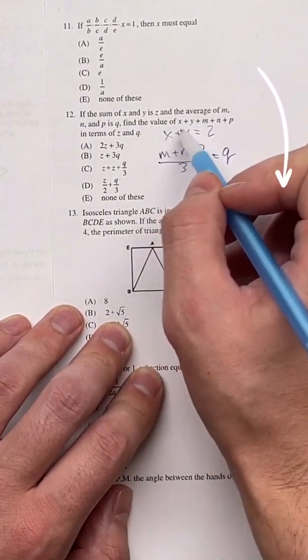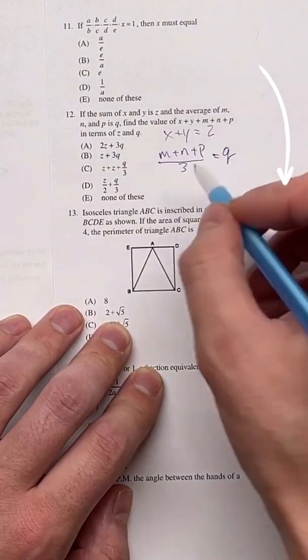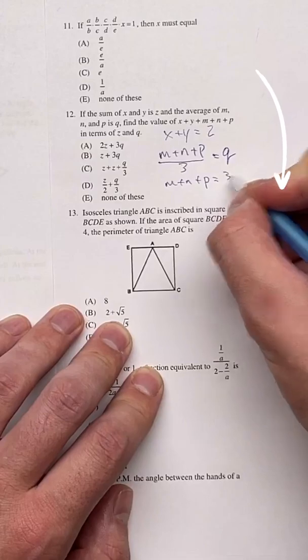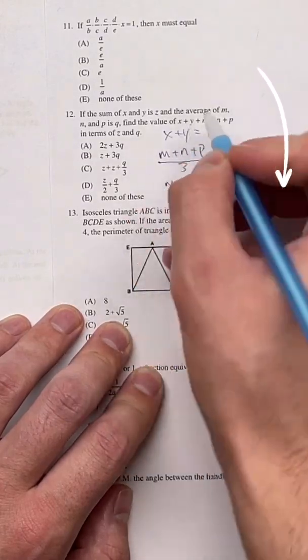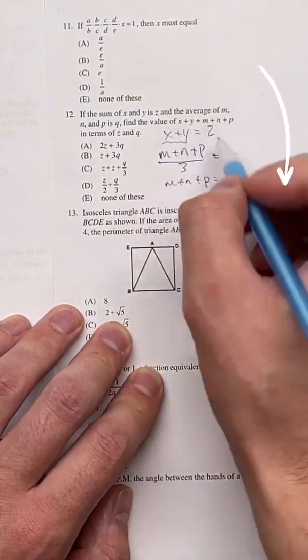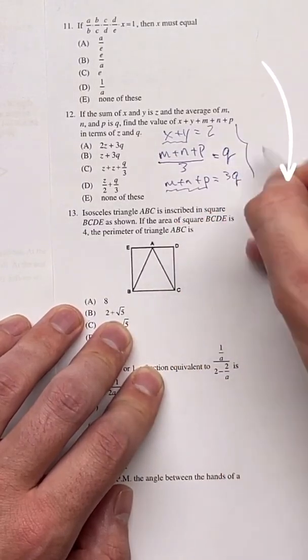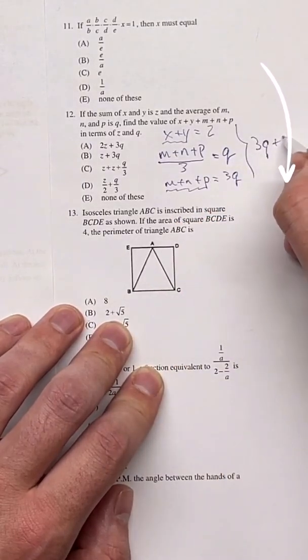What is the value of x plus y plus all this in terms of z and q? Let's multiply both sides here by 3. So we get m plus n plus p equals 3q. And here we have what we wanted. x plus y is right here, and m plus n plus p is right here. So the answer is 3q plus z, which is b.